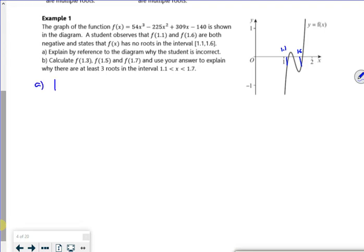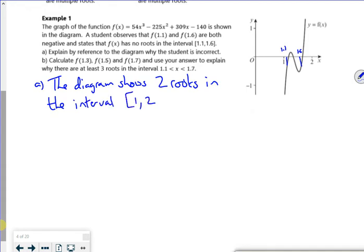So for part A, so there are two, so the diagram shows two roots in the interval 1 to 2. It says use 1.3, 1.5 and 1.7. Well I want 1.1 as well. So 1.1,